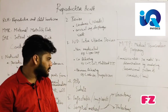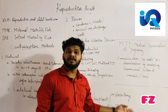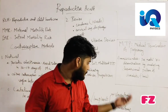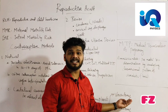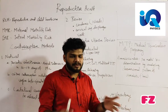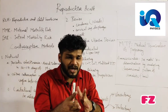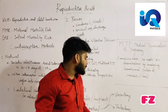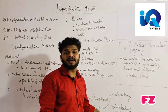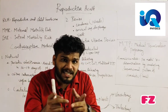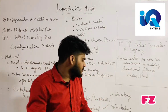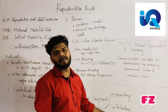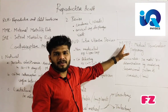Surgical methods involve sterilization. Vasectomy is performed in males — a small part of the vas deferens is cut. Tubectomy is performed in females — a small part of the fallopian tube is cut.